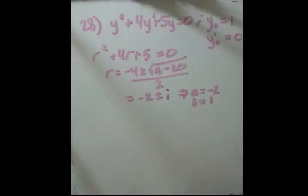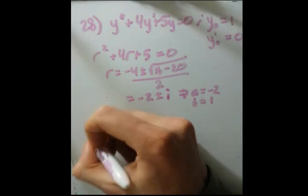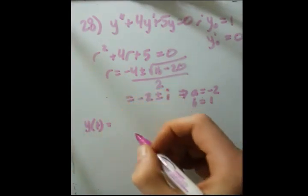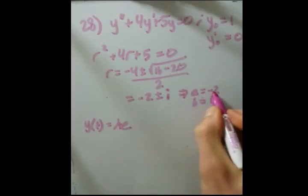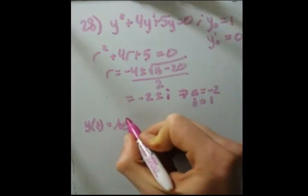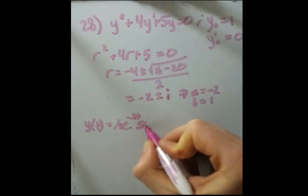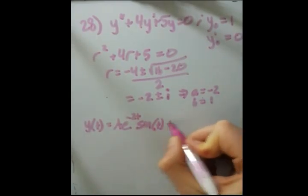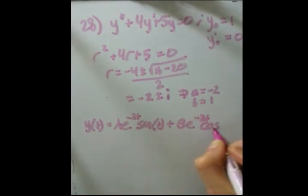So we're going to do the same thing we did before. We're going to say that y of t is simply equal to a e to the, and now a, this a is different than this a. Maybe the c1 was better than c2. And now sine of 1t plus b, same exponential, and now cosine of t.